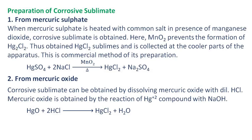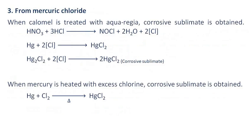From mercuric oxide: Corrosive sublimate can be obtained by dissolving mercuric oxide with dilute hydrochloric acid. Mercuric oxide is obtained by the reaction of a mercuric cation compound with sodium hydroxide.